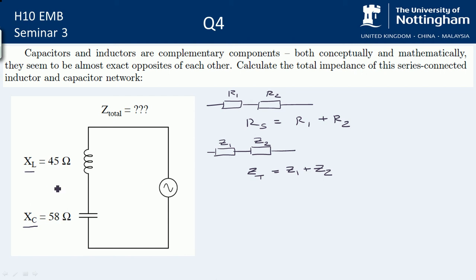Well, the good news here is because they've already been converted into reactances, so they're already in ohms, we don't need to worry about that. This is the correct value for this frequency. So we need to add them together. But the main thing to remember is the phase. So for this inductor, it's going to be plus j, 45 ohms. And here it's going to be minus j, 58 ohms because of this phase shift.